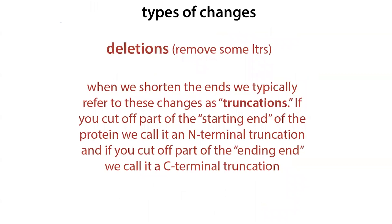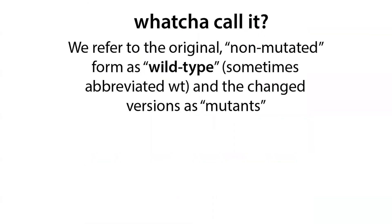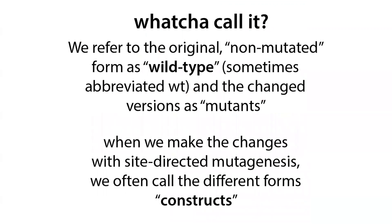These are called N-terminal truncations if at the beginning, or C-terminal truncations if at the end. This notation refers to the fact that one end of a protein is the N-terminus and the other is the C-terminus. We refer to the original non-mutated form as wild type, sometimes abbreviated WT, and the changed versions as mutants — though remember that technically it's the gene that has the mutation; these are really just amino acid changes, but in common usage we call them mutants.